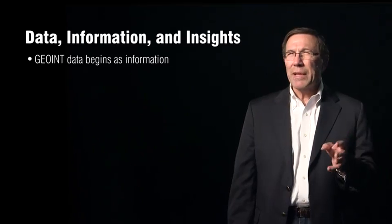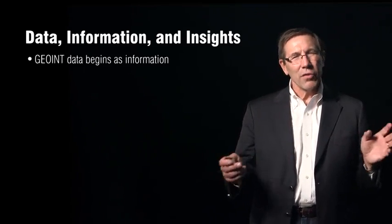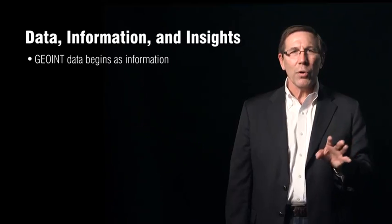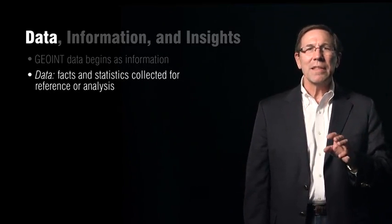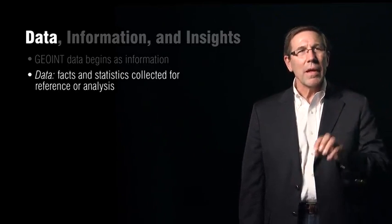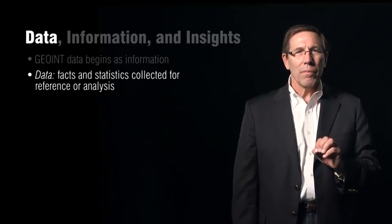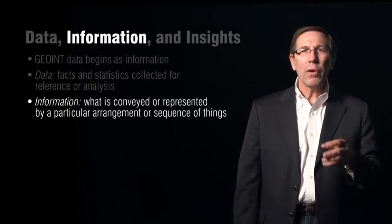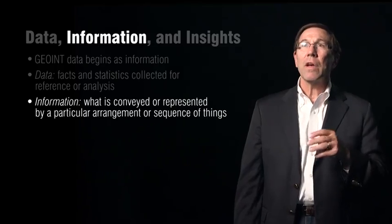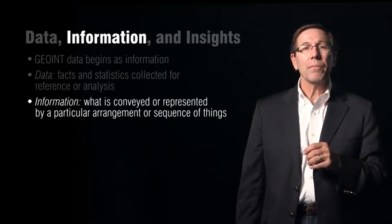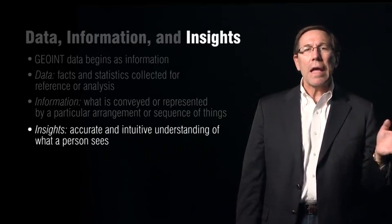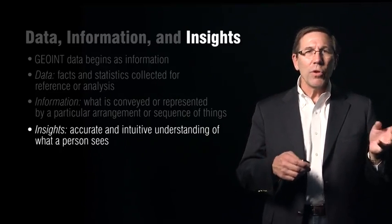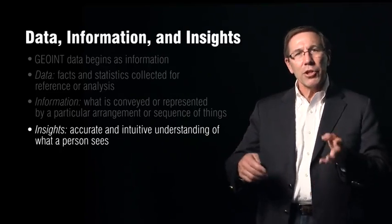GEOINT data generally begins as information. To understand this statement, let me explore a few of the terms. Data are facts and statistics collected about something on the Earth — they are raw numbers in a lot of cases. Information is what is conveyed or represented by a particular arrangement or sequence of things, which could be data. Insights are an intuitive understanding of what a person sees. Sometimes we use data, converting information, to help us give insights.